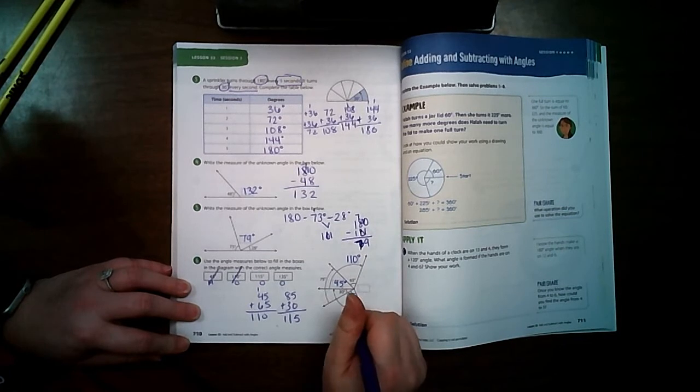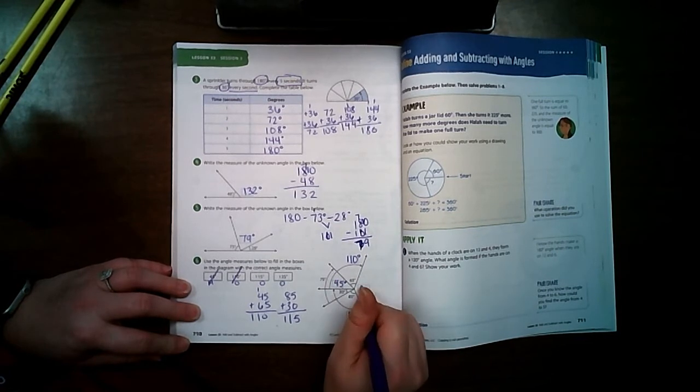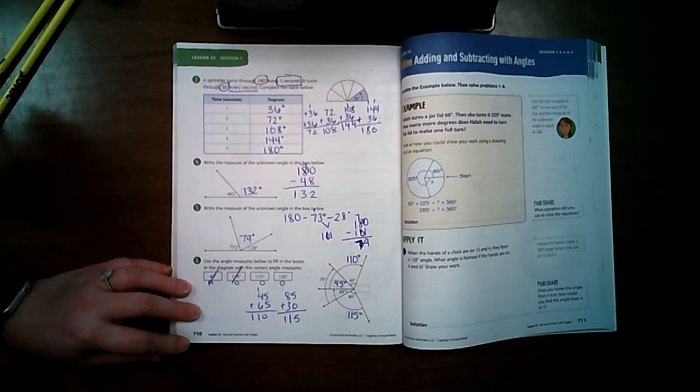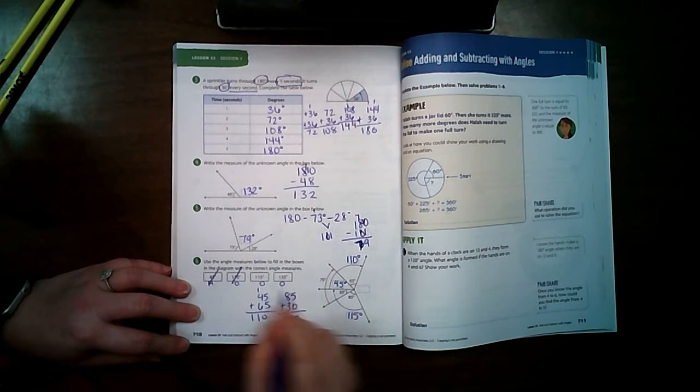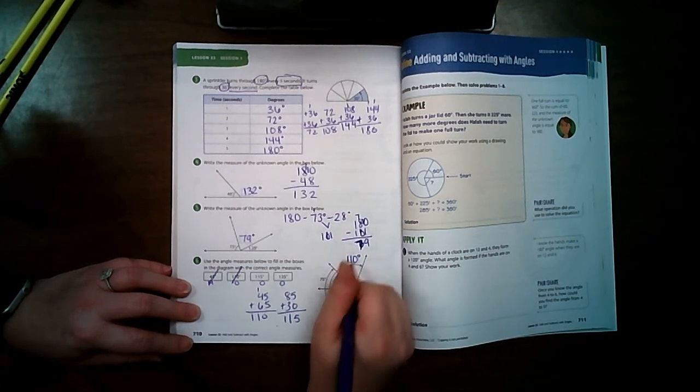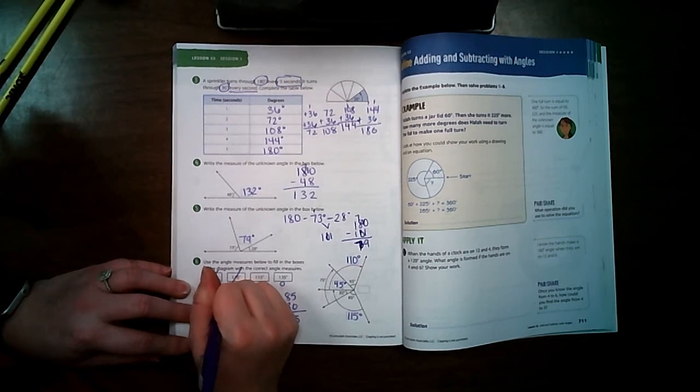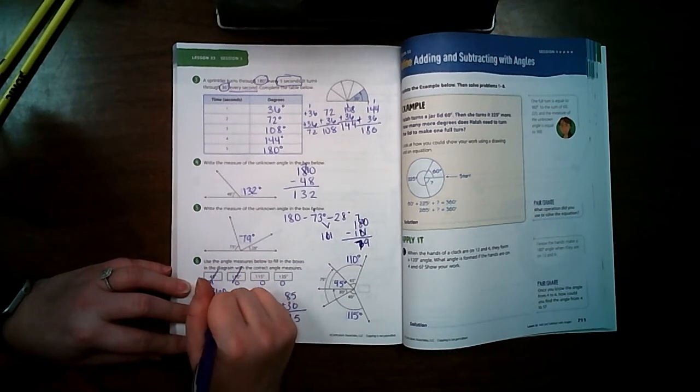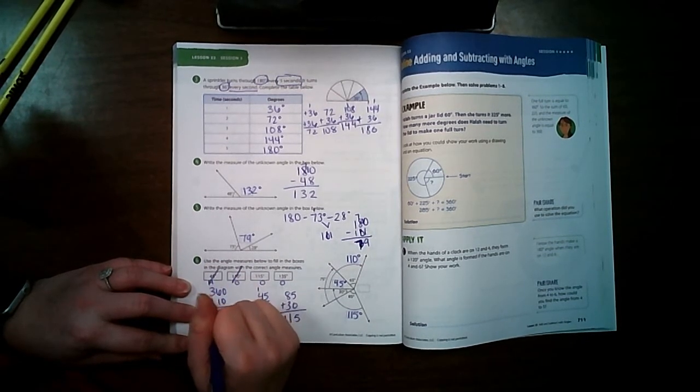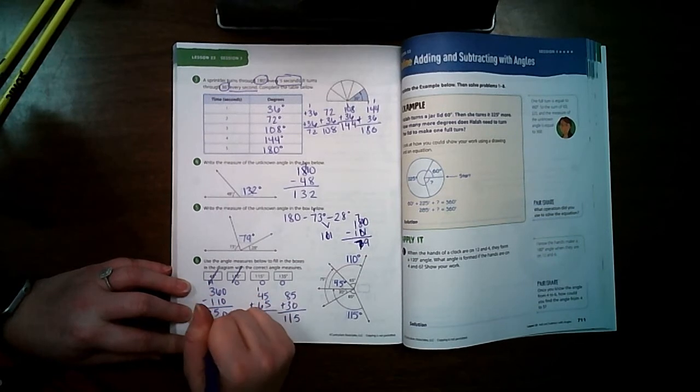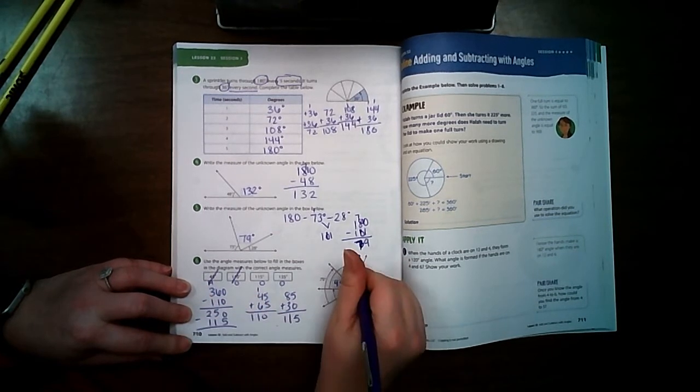And this last one, if I added all these together and subtracted it from 360, or I can add these two. So if I do 360 minus 110 minus 115, because this one and that one, I get 135 degrees which was the only one I had left.